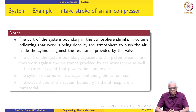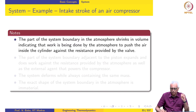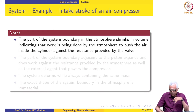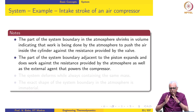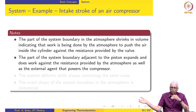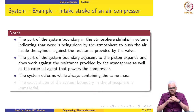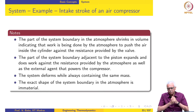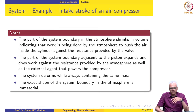To summarize: the part of the system boundary in the atmosphere shrinks in volume, indicating work is being done by the atmosphere to push the air inside the cylinder against the resistance provided by the valve. The part of the system boundary adjacent to the piston expands and does work against the atmosphere and whatever external agent powers the compressor. The system deforms while always containing the same mass. The exact shape of the system boundary in the atmosphere is immaterial, which we will demonstrate later.